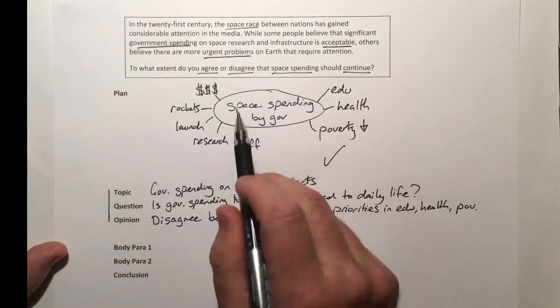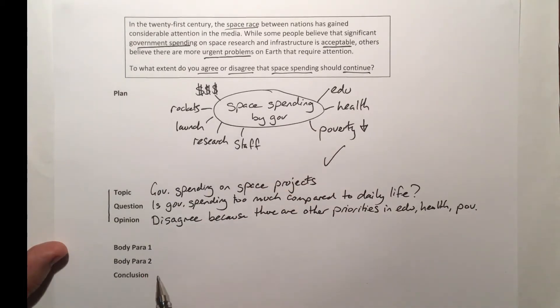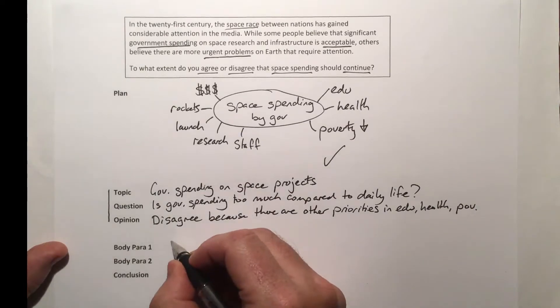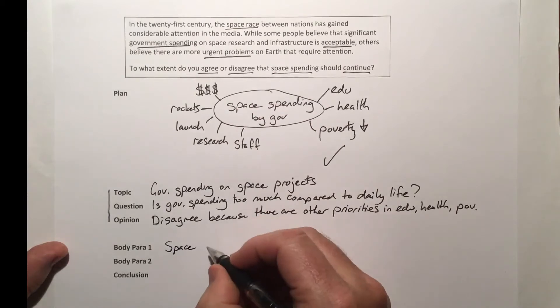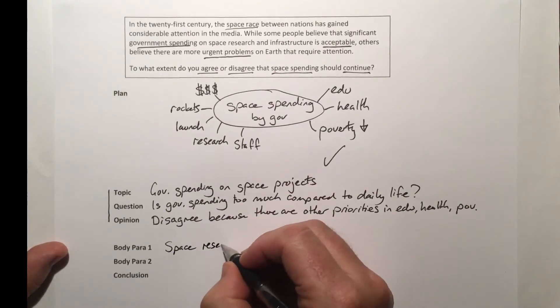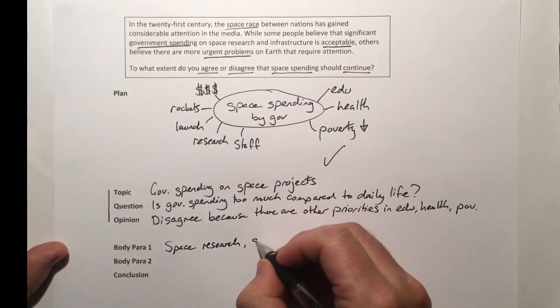Then I'm going to think about the structure of my overall essay. Body paragraph one: I'm going to talk about this side and say the space research and spending is somewhat important,